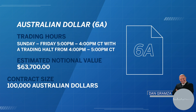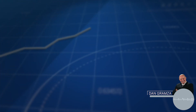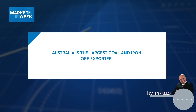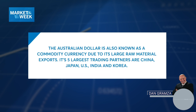The Australian dollar is the fifth most largely traded currency in the world. A major factor in the Australian economy is the selling of its resources. In fact, Australia is the largest coal and iron ore exporter. The Australian dollar is also known as a commodity currency due to its large raw material exports.